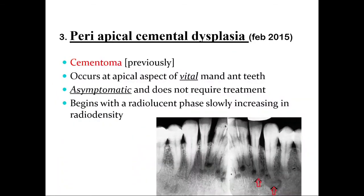Periapical cemento-osseous dysplasia is formerly known as cementoma, associated with vital mandibular anterior teeth. It is asymptomatic and does not require any treatment. It initially starts as a radiolucency — similar to a periapical granuloma or periapical abscess — and then in the mature stage, it increases in radio density, becoming more radio-opaque.